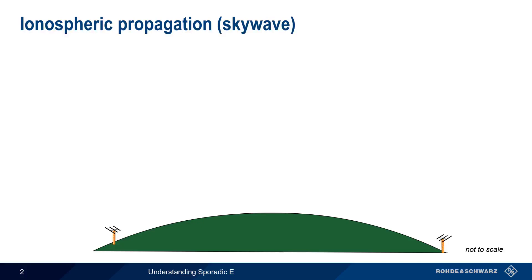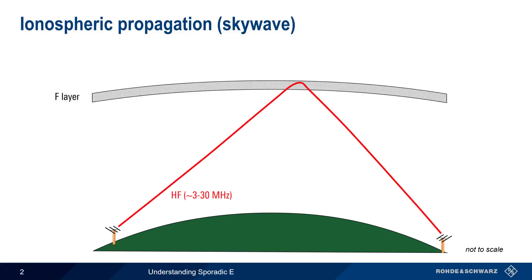As you may already know, the ionosphere, a layer of charged particles surrounding the Earth, consists of several layers. One of these layers, the F layer, can refract or bend signals at HF frequencies back towards the Earth, enabling very long distance communications under the proper conditions. This is often called skywave propagation.